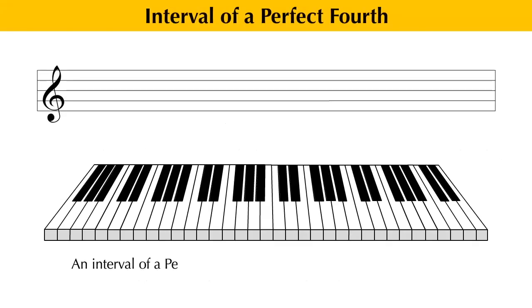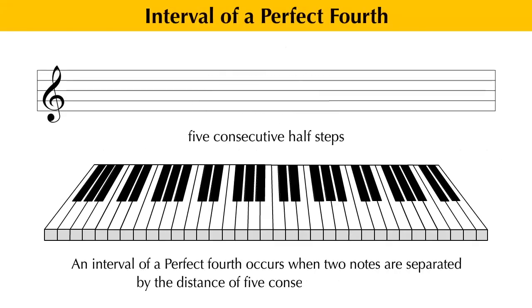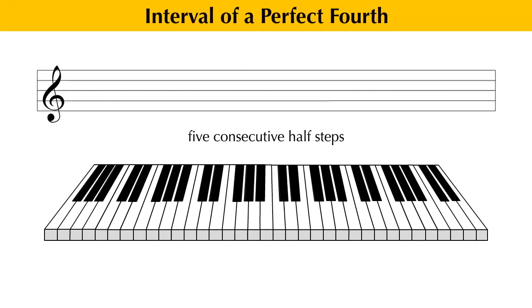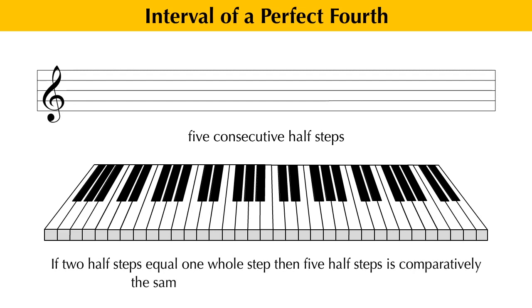Put more simply, an interval of a perfect fourth occurs when two notes are separated by the distance of five consecutive half steps. If two half steps equals one whole step, then five half steps is comparatively the same as two whole steps and one half step.